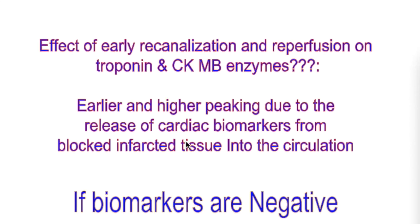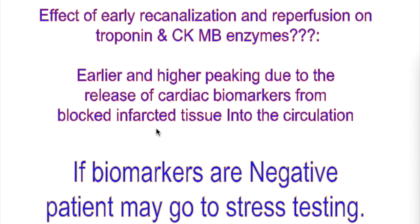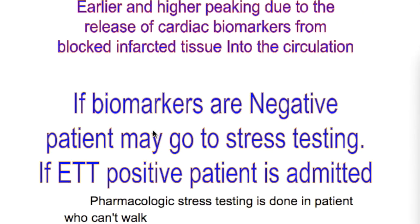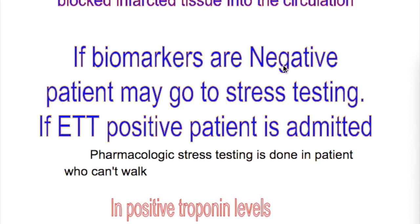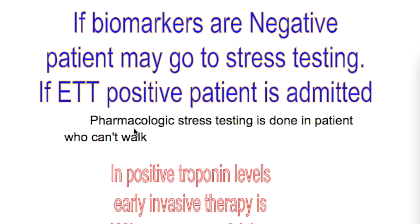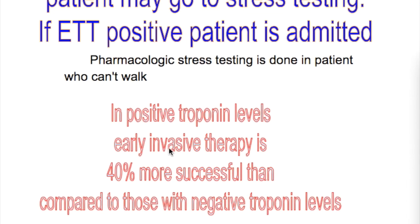What is the next step if biomarkers are negative in a suspected myocardial infarction patient? If biomarkers are negative, the patient is taken for stress testing. If exercise tolerance testing is positive, the patient is admitted. If a patient cannot walk, pharmacological stress testing is performed instead.